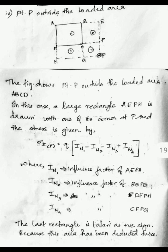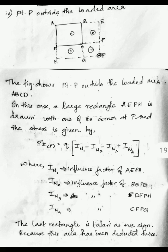The equation for Case 4 becomes: sigma equals Q into (I_N1 minus I_N2 minus I_N3 plus I_N4), where I_N1, I_N2, I_N3, and I_N4 are the respective influence factors for areas AEPH, BEPG, DFPH, and CFPG. This equation applies when point P is outside the load area. We will do numericals for further study.